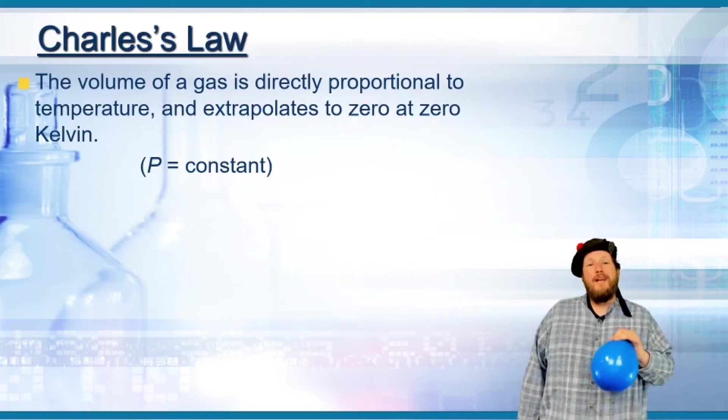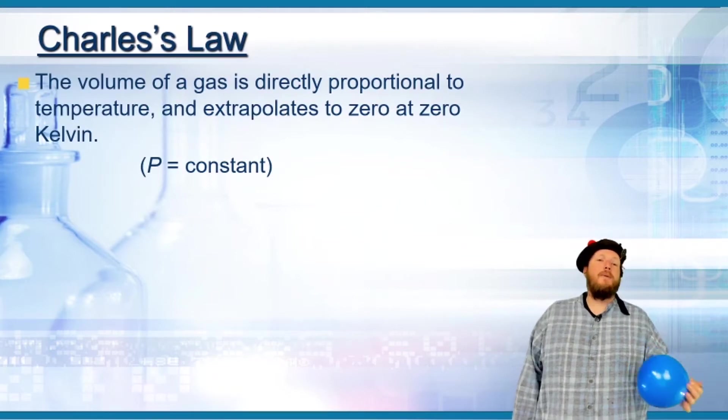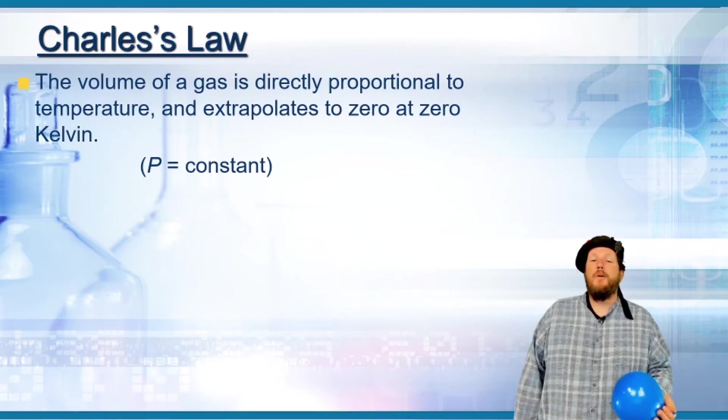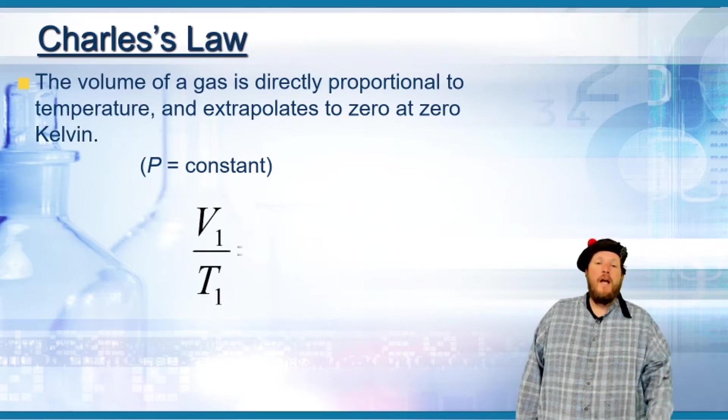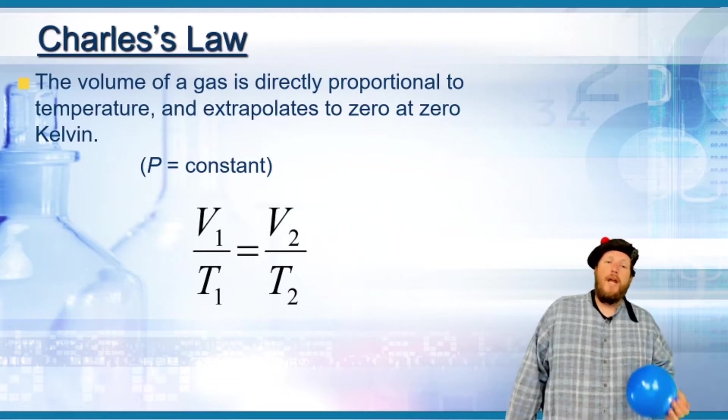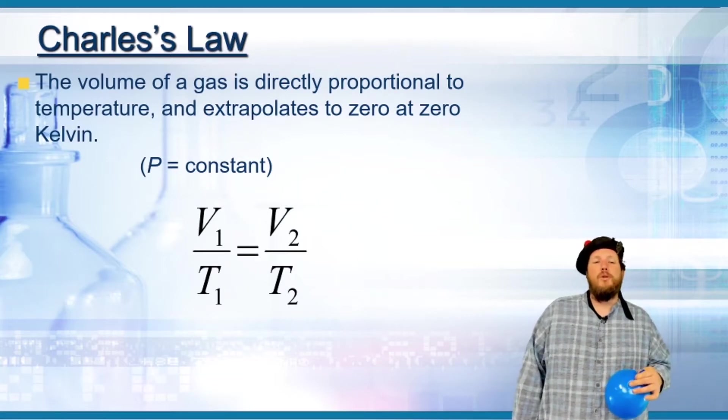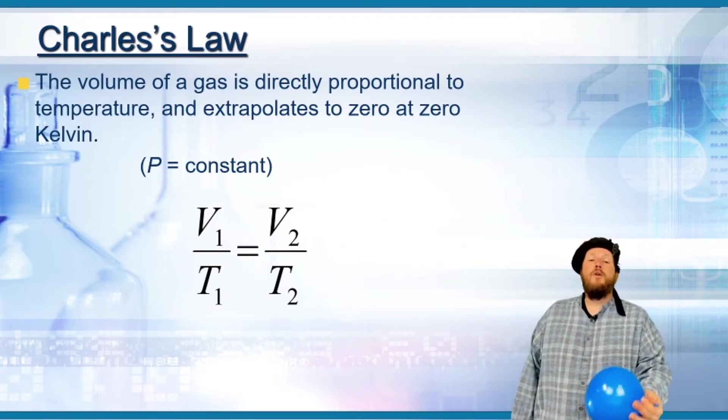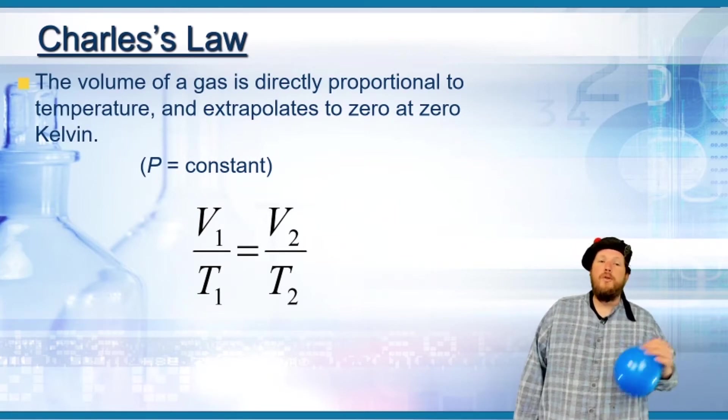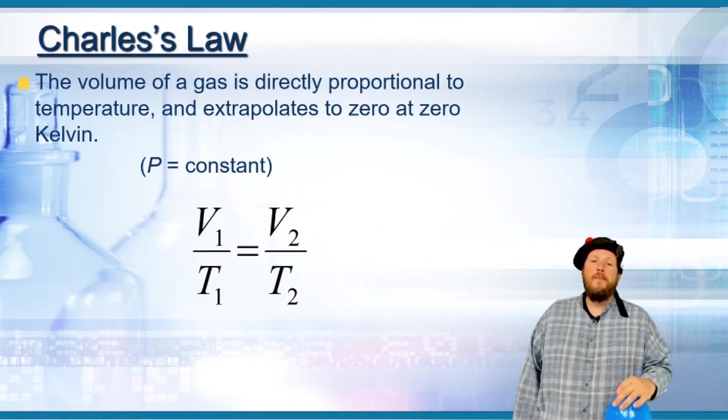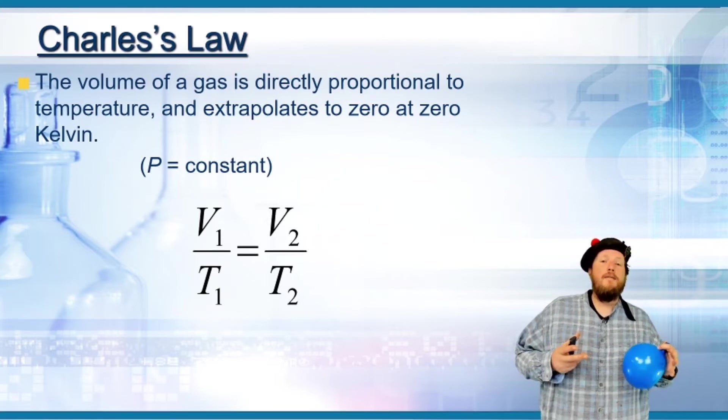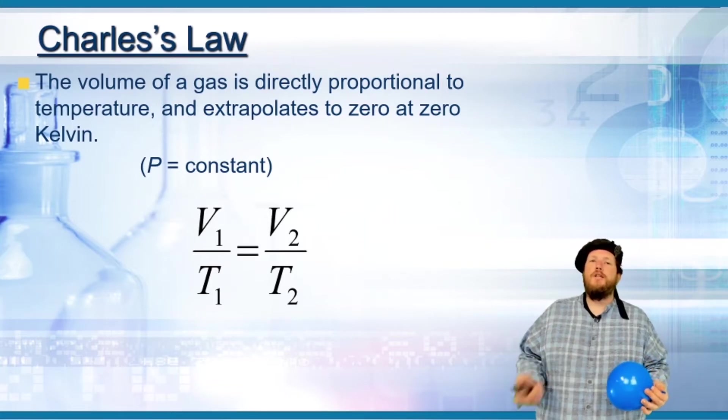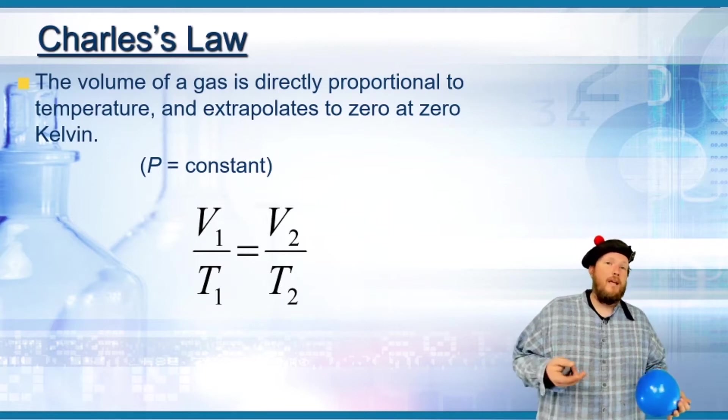This can be expressed as a proportionality: the volume of a gas is directly proportional to temperature and extrapolates to zero at zero Kelvin. But in addition to this, you can make this as a change. Volume one over temperature one, initial volume and temperature, will be equal to the ratio of volume two over temperature two, so V1/T1 equals V2/T2. What this gives you is a way to calculate if you have a change in volume, what the change in temperature is, assuming everything else remains the same.